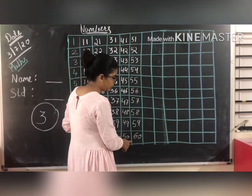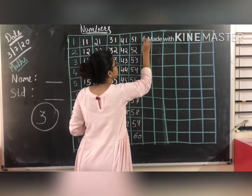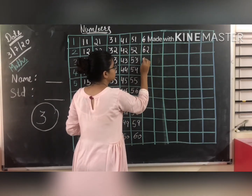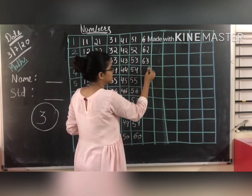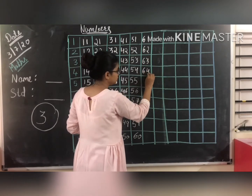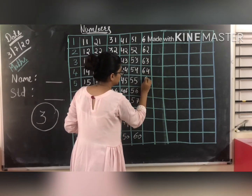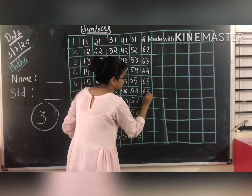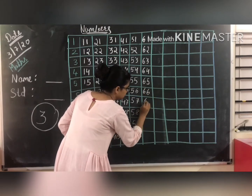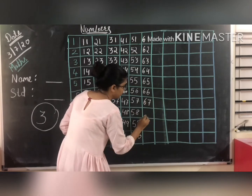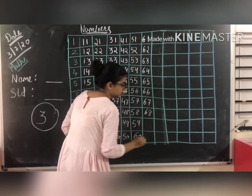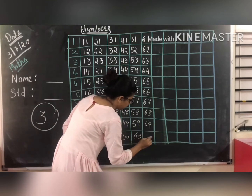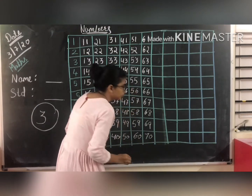After 60: 61, 62, 63, 64, 65, 66, 67, 68, 69, and 70.